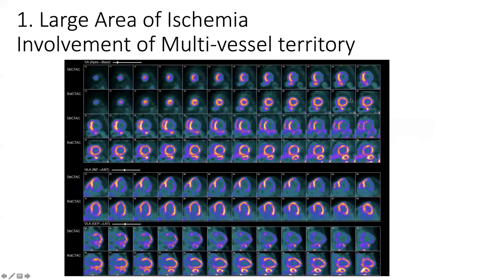Here we have an example of a 61-year-old man who showed dyspnea on exertion and was submitted for this reason to a stress-rest PET scan. The stress was obtained after rubidium infusion. The patient was submitted in the past to revascularization by PCI stenting on LAD and on LCX.